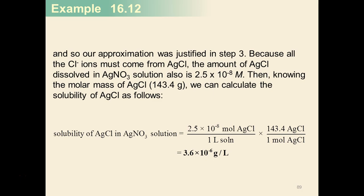So the approximation is justified from step three. All of the chloride ions must come from the silver chloride. So the amount of silver chloride dissolved in the silver nitrate solution is also 2.5 times 10 to the negative eighth molar.